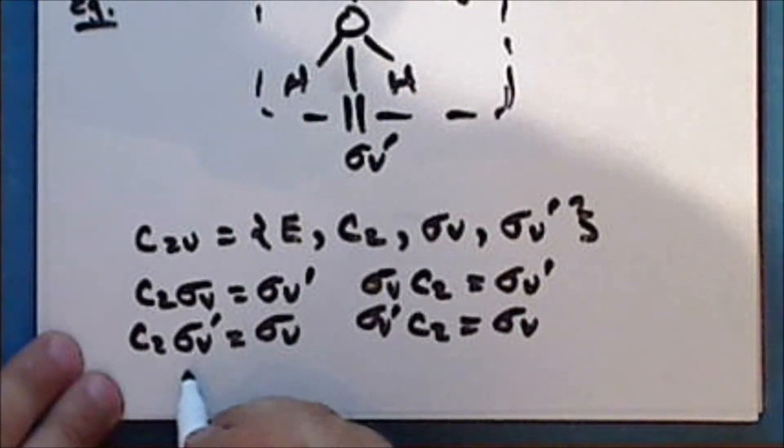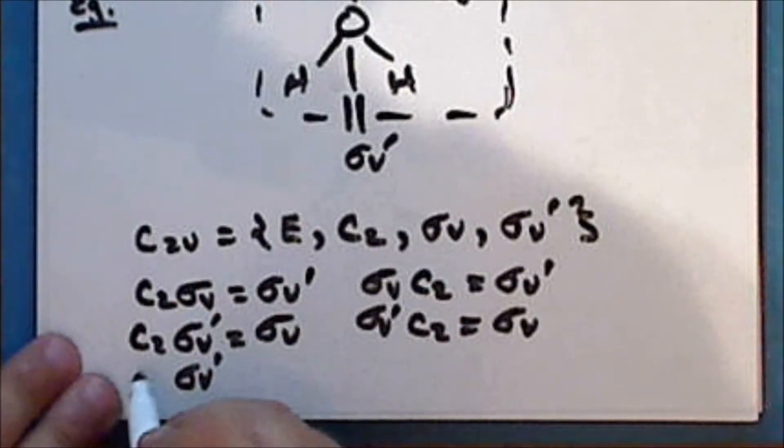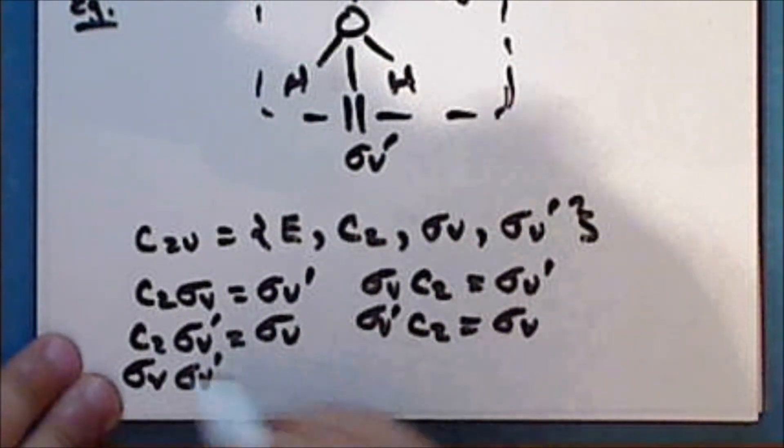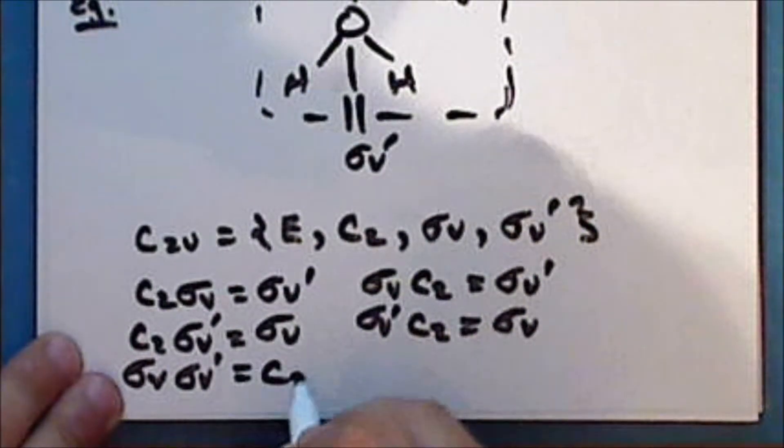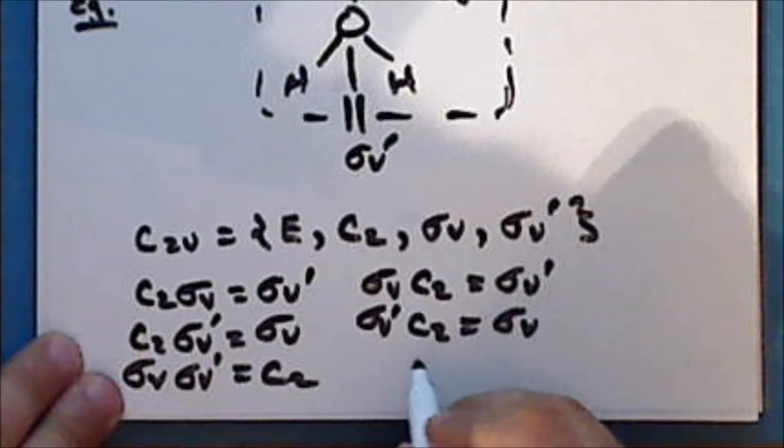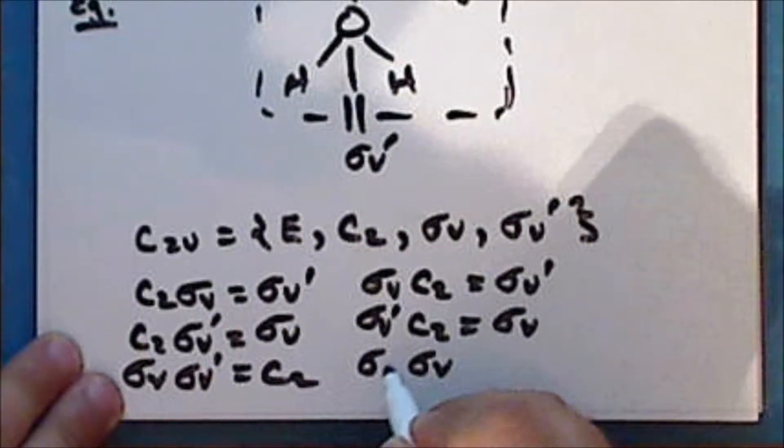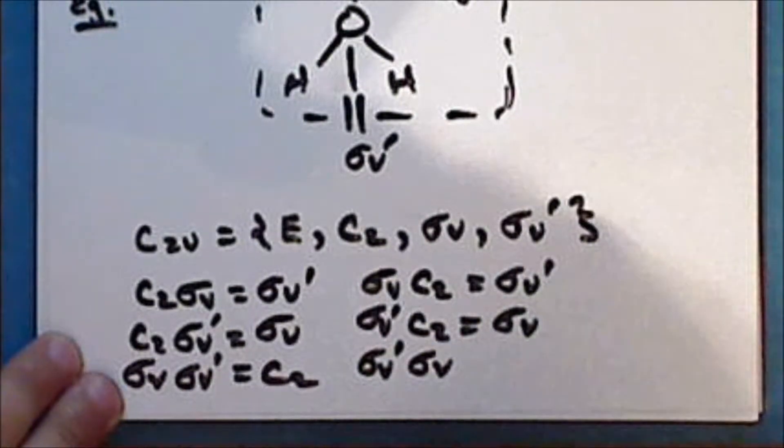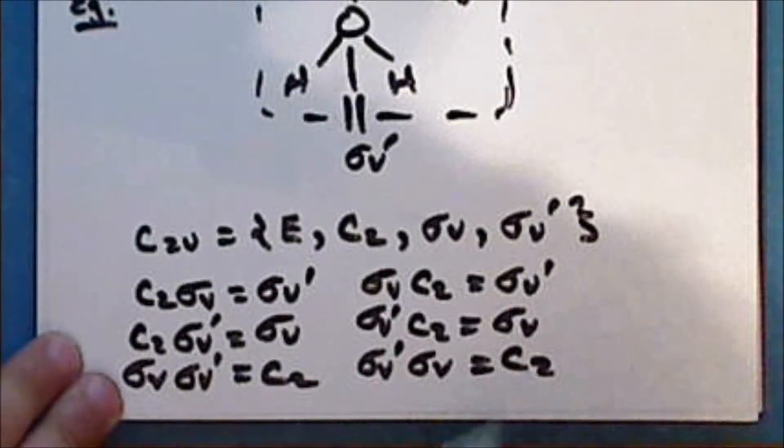And so if we now reflect first through the sigma V prime plane, and then reflect through the sigma V plane, then this is the same as rotation by 180 degrees. And similarly, if we first reflect through the sigma V plane, and then reflect through the sigma V prime plane, this is the same as rotation by 180 degrees.